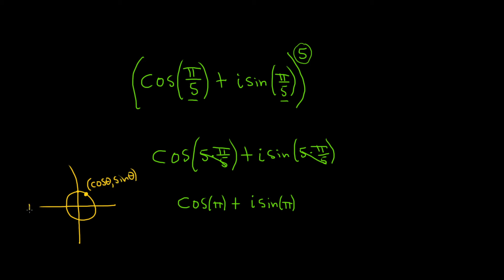So pi is over here because this is 0 and this is pi over 2, and so this ordered pair on the unit circle would be negative 1 comma 0.